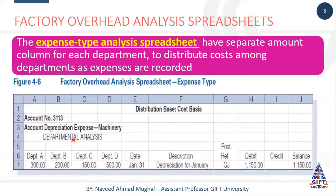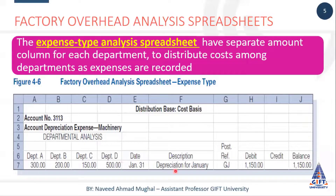Ye expense sheet ka ek format hai jis mein ham log har ek department ka ek column banate hain, aur phir us ke baad jo hai woh is ki proper account ki format hoti hai. Agar gour karein, to ye basically yahan peh ek running balance account bana hoa hai - that is depreciation expense ka - date, description, post reference, debit, credit, balance. To ye ek account ka format hai.